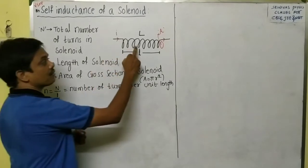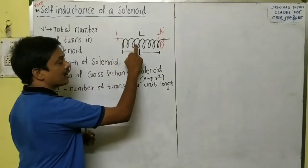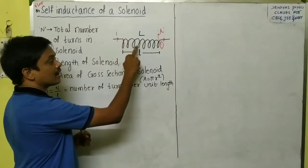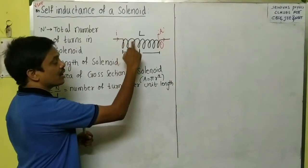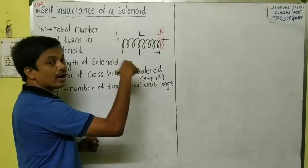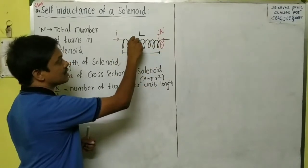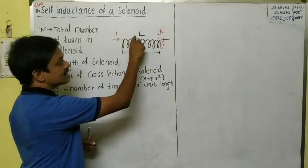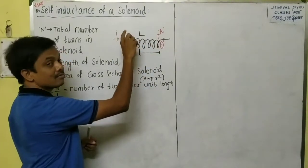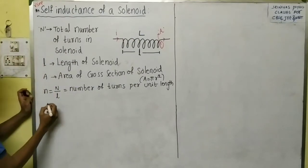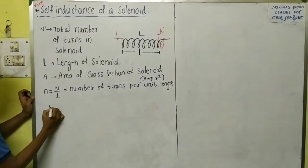Now, what is self-inductance? Self-induction is the induction of an EMF in a coil due to a varying current in it. If the current in the coil varies, an EMF is induced in it — that is called self-induction.